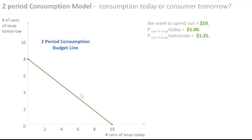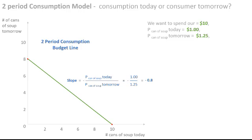Along this line are all the possible combinations of cans of soup we can have today and tomorrow. Now let's take a look at the slope. The slope is negative, and we find it by dividing the price of a can of soup today by the price of a can of soup tomorrow. Substituting $1 for the price today and $1.25 for the price tomorrow, we find that the slope is negative 0.8.